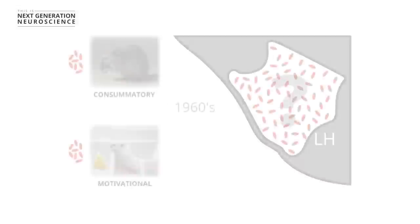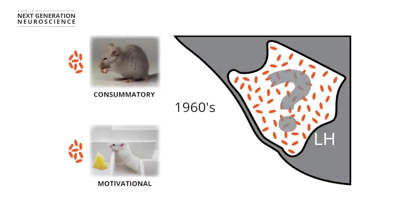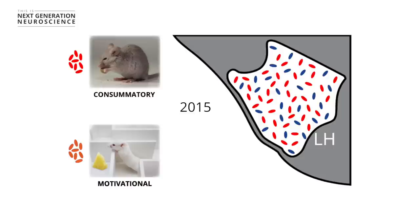So that allowed us, for the first time, to uncover that at the individual cellular level, we saw cells that were responsive to the feeding events, the consumatory events, but also different cells, completely segregated cells that were responsive to the motivated behavioral events.